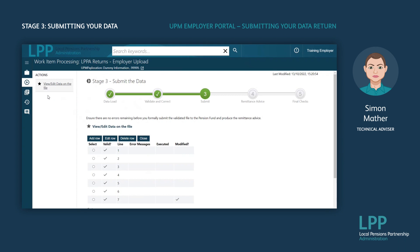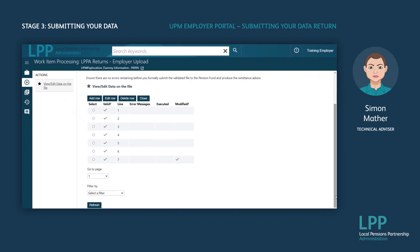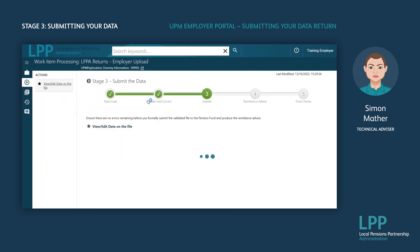This will take you to Stage 3. Again, the lines of data will be shown on your screen, and at this point you can double check that there are no errors that need correcting. If there are no further errors, click Close, then click 'Submit the Data' in the actions column, followed by Next.